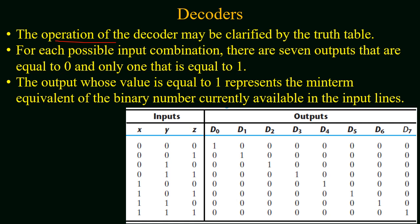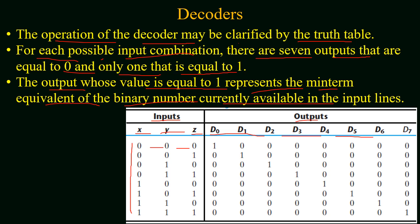The operation of the decoder for binary-to-octal conversion can also be clarified by the truth table. For the eight possible octal outputs, a minimum of three bits — represented by x, y, and z — are required, and the outputs are labeled d0 to d7. For each possible input combination, seven outputs will be equal to zero and only one output will be equal to one. The output whose value is one represents the minterm equivalent of the binary number currently on the input lines — whatever input is applied, the corresponding output will be one and the rest will be zero.